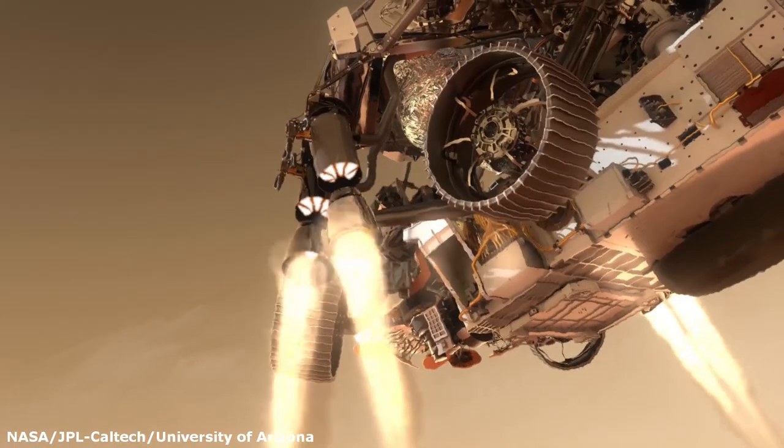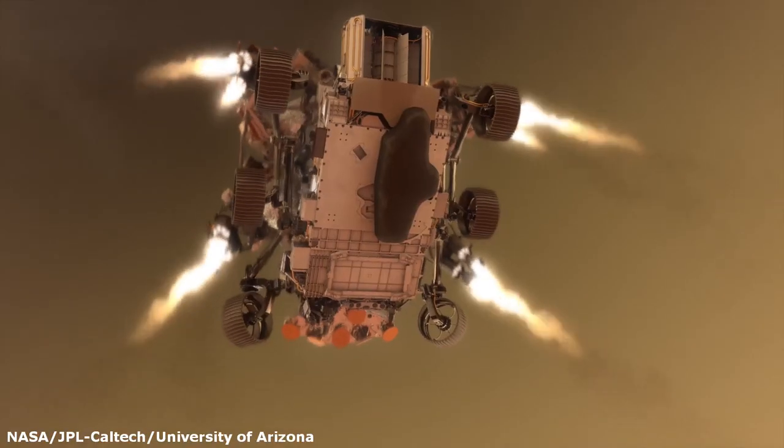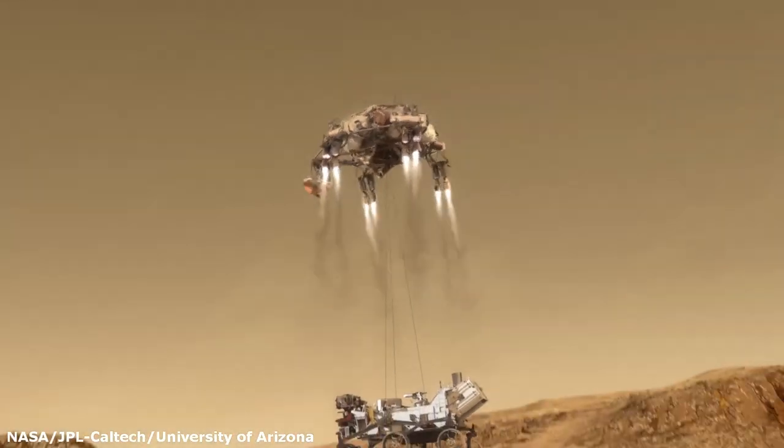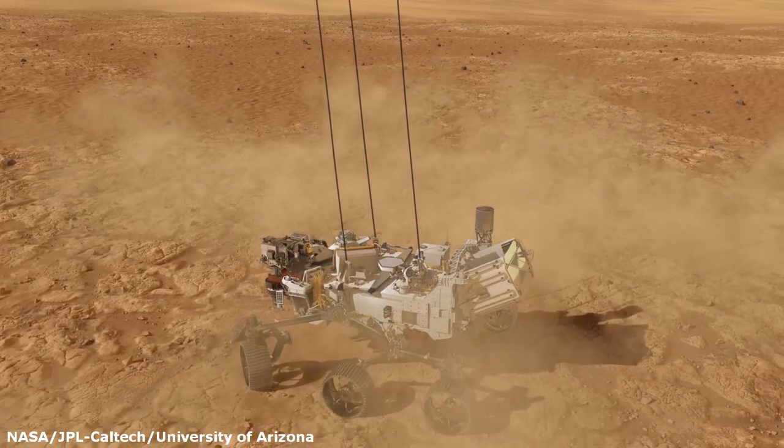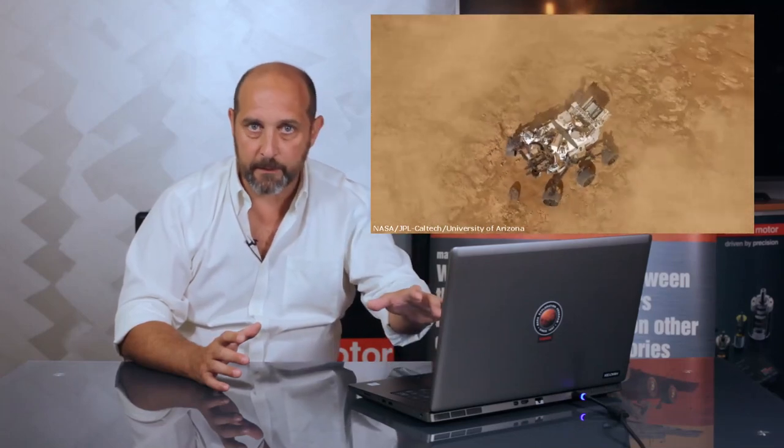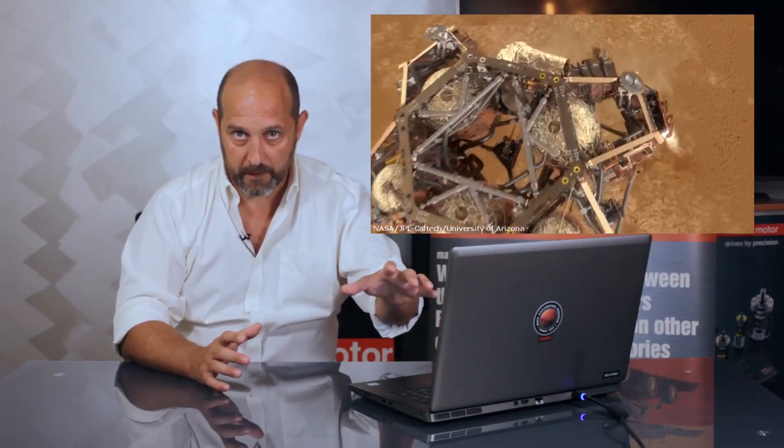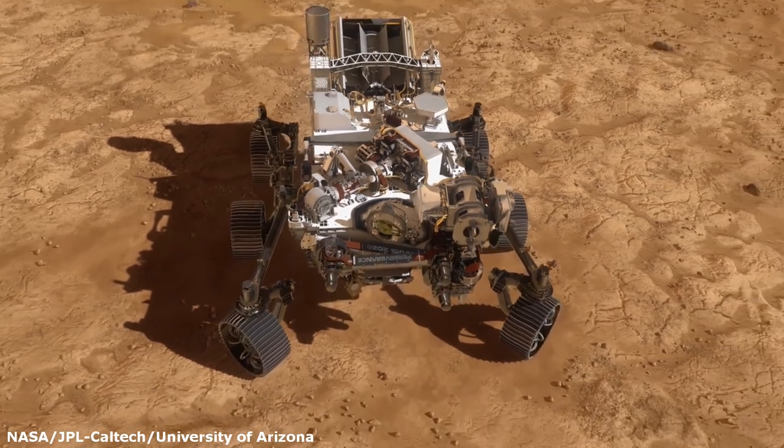This has been attempted for the first time in Curiosity and has proven to be a great alternative to the airbags used previously in Spirit and Opportunity. As soon as the rover detects that the wheels are touching the ground, the connection cables are broken and the crane is free to fly away, otherwise it would fall on top of the rover.